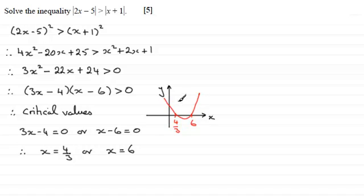And we want to know where this graph, the y values for it, are greater than 0. And that's where it's above the x-axis. And it's going to be greater than 0 for x values that are less than 4 thirds, or x values that are greater than 6. So we can say that, therefore, from the graph, we see that x has to be less than 4 thirds, or, quite separately, x can be more than 6.